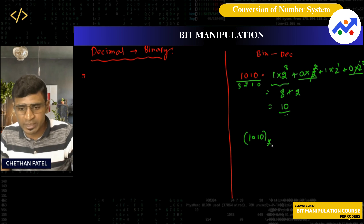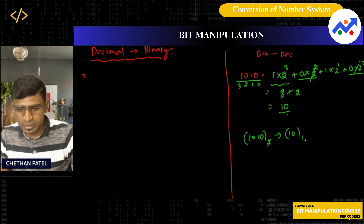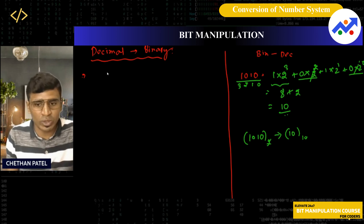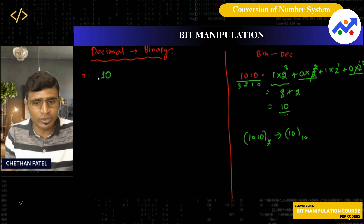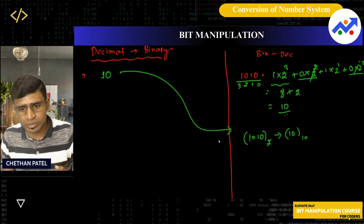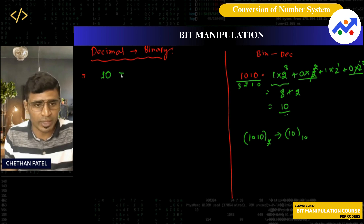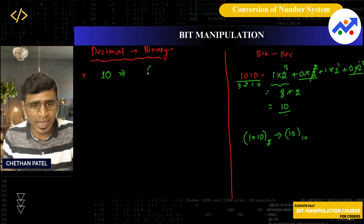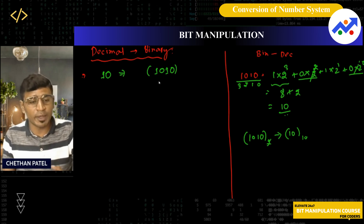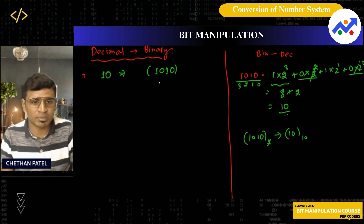So I converted 1010 in binary to decimal, which is 10 in base 10. Now suppose I give you 10 directly and I want it in binary format — how do you do that? The answer should come out as 1010. So how do we convert this decimal number to the binary number system? That's what we're going to see.